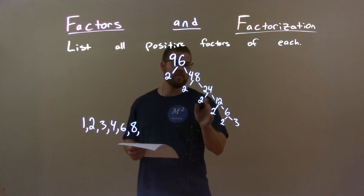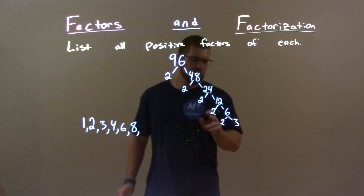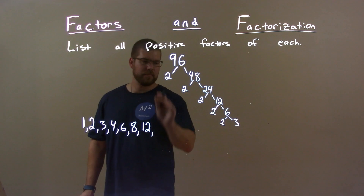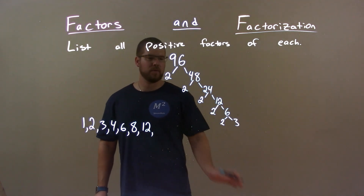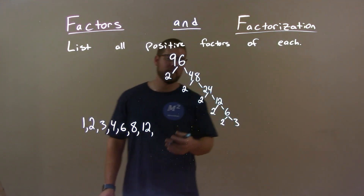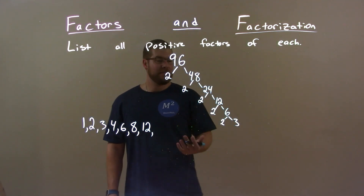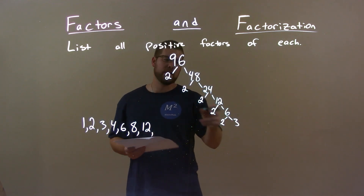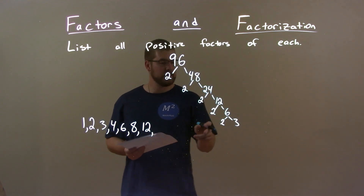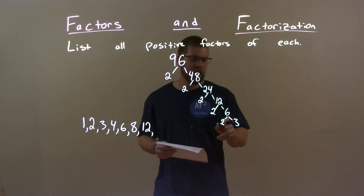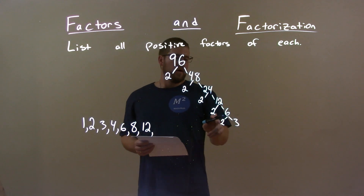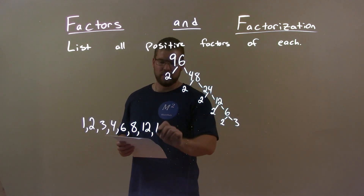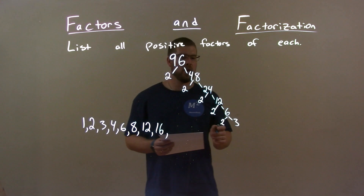Nothing for 10 or 11, but 12 — 2 times 2 times 3 is 12. 13 is prime, no. 14, no — because 7 wasn't there. 15, can we have 15? No. But 16 — 2 times 2 times 2 times 2 is 16. 17 is prime, no.